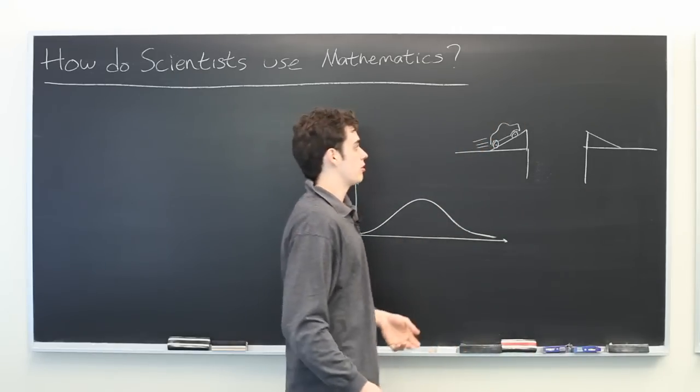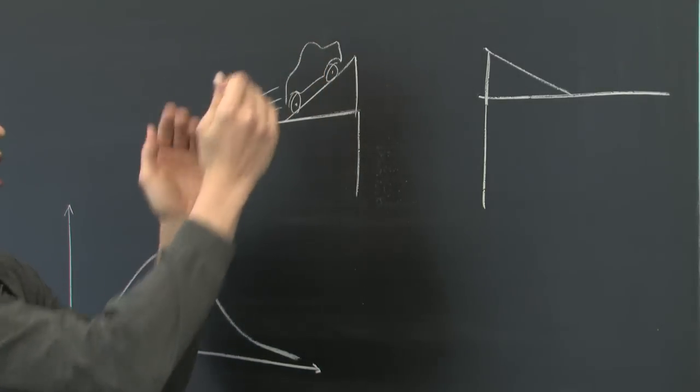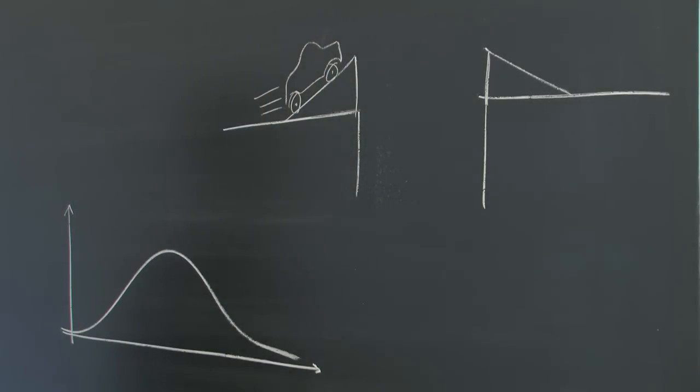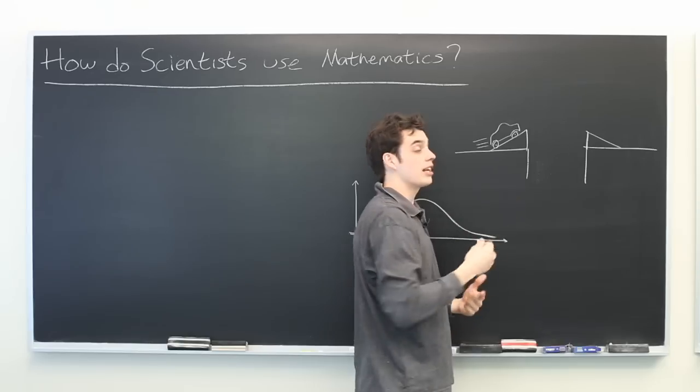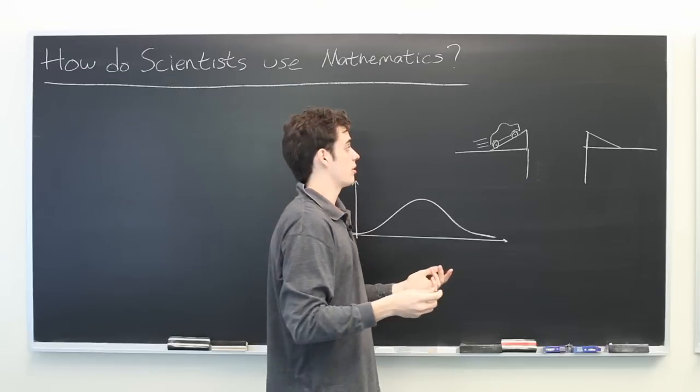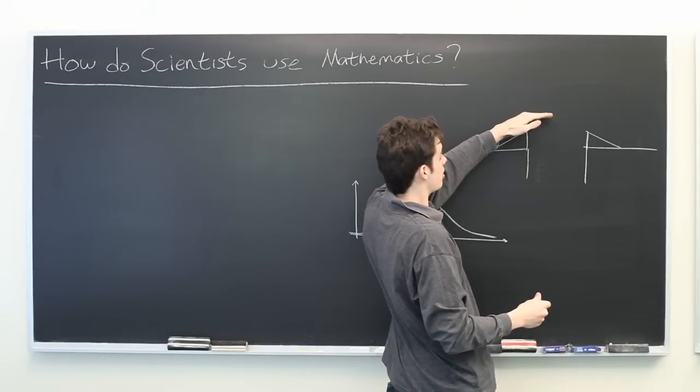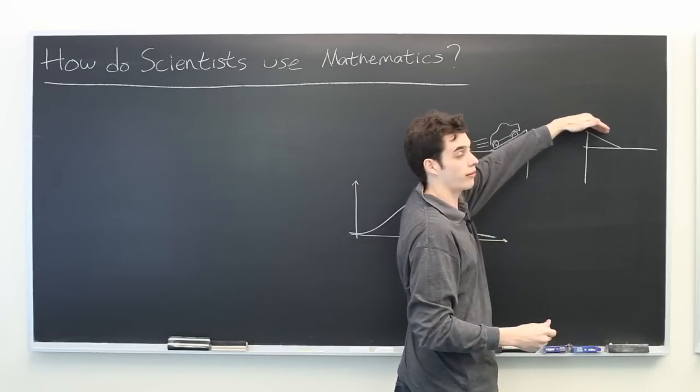Well, you start with a simple model, such as imagining that this is just a single point or a block of mass, but then a more complicated model might incorporate the fact that the car has a center of mass. And a further refined model might incorporate air resistance and drag, to figure out how much the speed of the car will decrease as it's traveling through the air.